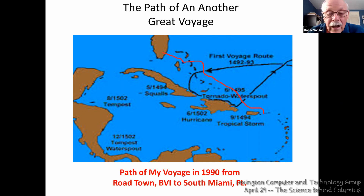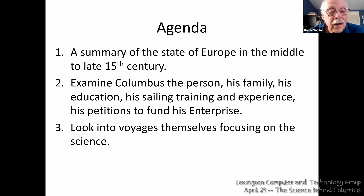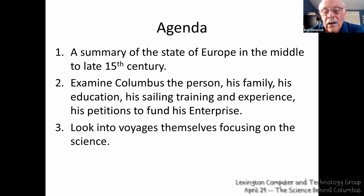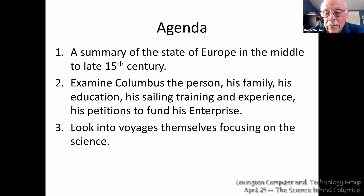I thought I'd start out with a brief agenda. First, in two slides, we'll see a brief summary of the state of Europe in the middle to late 15th century — some of these undercurrents supplied the impetus for sea exploration in general, and more specifically, for finding a sea route to the Far East. As you might guess, wealth was the prime motivator. Second, we'll briefly examine Columbus the person. Third, we will look into the voyages themselves, focusing on the science that enabled him to get to the New World and thus become fabulously wealthy, his primary goal, and incidentally gain great fame. We'll also look at the science of the Columbian exchange.